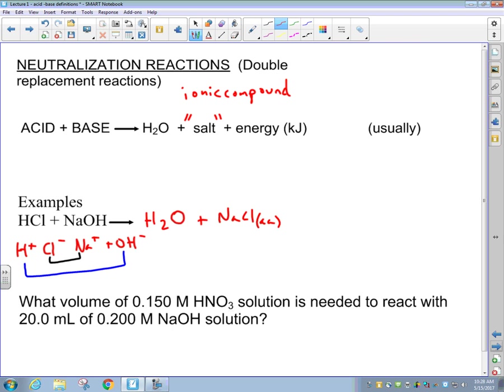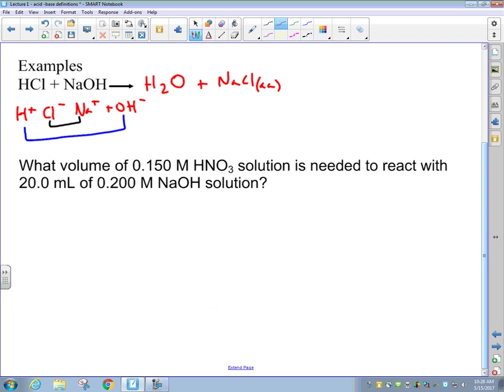Now we can take the chemical reaction like we have listed here and we can do a calculation with it. Combine our stoichiometry with our newly found knowledge of acid-base chemistry. The question posed for the end of our lecture here today is what volume of 0.150 M HNO3 solution is needed to react with 20 mL of 0.200 M NaOH solution. If you have not gotten out your mole map at this point that will be really helpful for you.